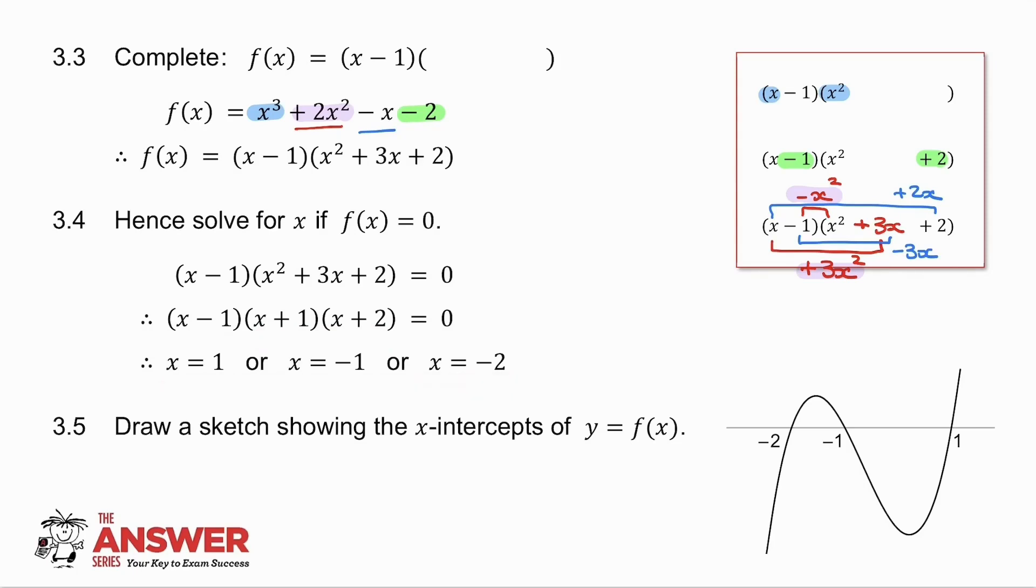3.5 says draw a sketch showing the x-intercepts of the graph of y equals f of x. We will learn in calculus, if you have a positive x cubed graph, the general shape will look like that. I've got to have a graph with that shape with x-intercepts of minus 2, minus 1, and 1. That is what my cubic will look like.